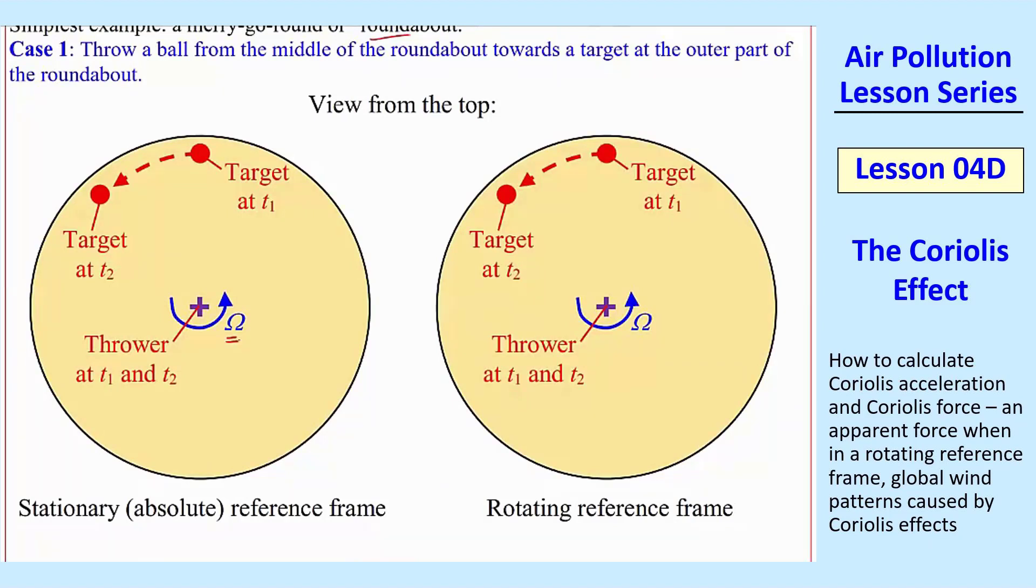And this is, on the left is the absolute reference frame, and on the right is the rotating reference frame. So if you're moving with the rotating merry-go-round, or roundabout. So let's think about this. What happens if you throw a ball, and you throw it straight at the target, so there's another person sitting on the other end. You throw it from the middle at some speed.